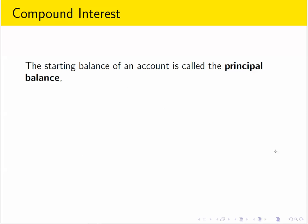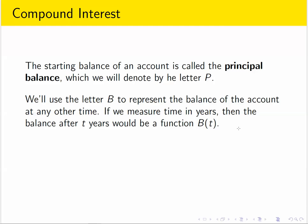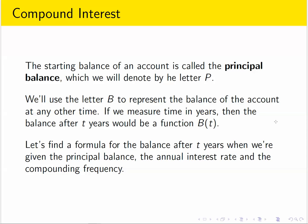The starting balance of an account is called the principal balance, and we will denote that by the letter P. We'll use B to represent the balance at some other time. So as time goes on, as years pass and the account accrues interest, B changes. So you can really think of B as a function of time, a function of t, although a lot of times we'll just write the letter B by itself to represent that function. What we're going to do next is try to find a formula for the balance after t years when we know other things, when we know how much money we started with and the annual advertised rate and how often interest is being compounded.